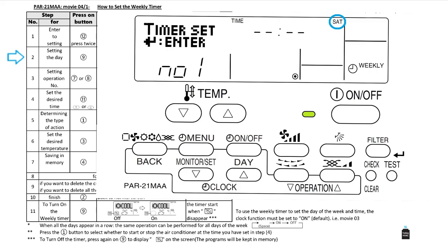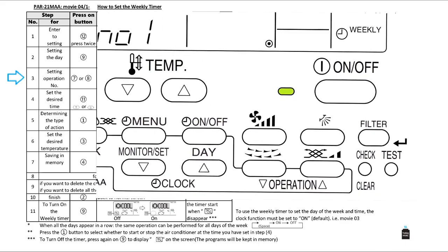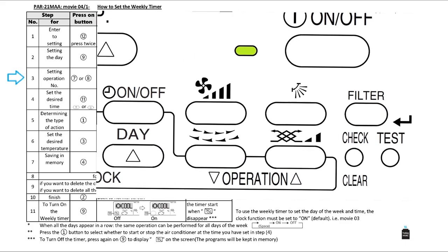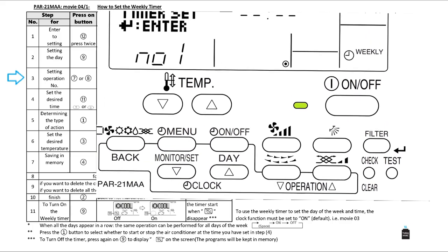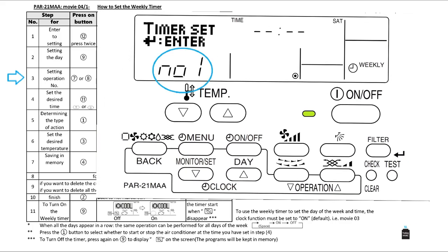Step three: We set the operation number by these buttons. For each day, the operation number can be from number one till number eight. Since it's our first pattern for Saturday, we leave number one as is. When we finish the pattern and we want another pattern for that day, we will raise it to two and so on.